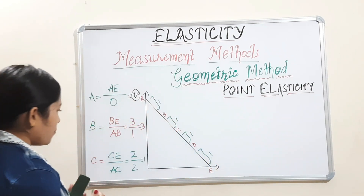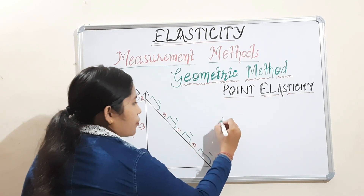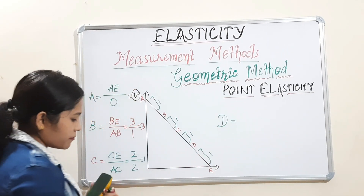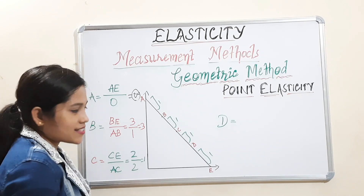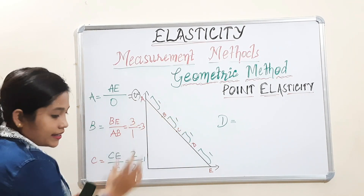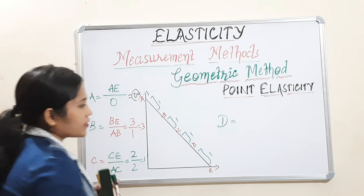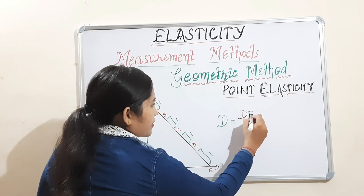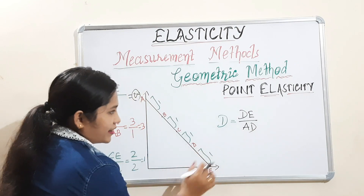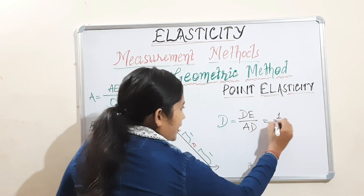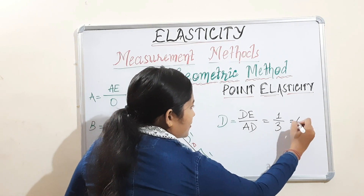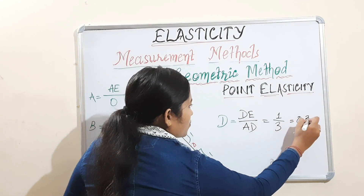Next is point D. At point D, the lower segment is DE and the upper segment is AD. So it is DE divided by AD. DE is 1 and AD is 1+1+1 = 3. So 1 divided by 3 equals 0.33.